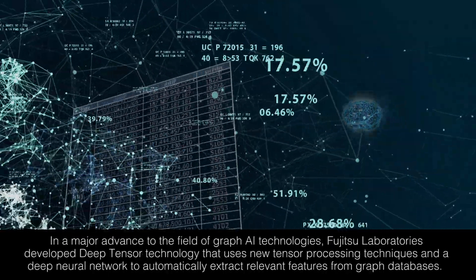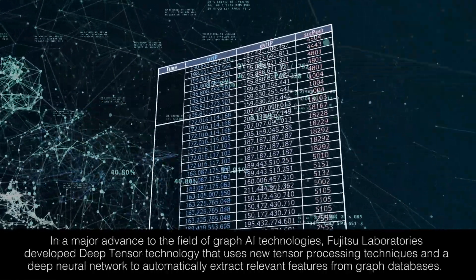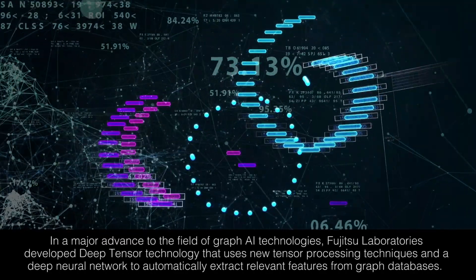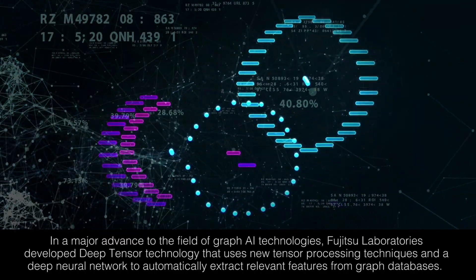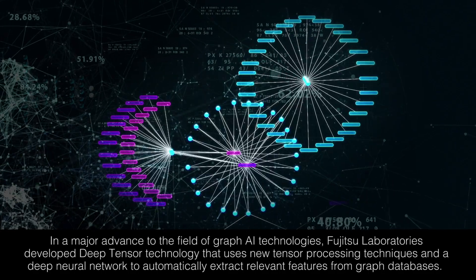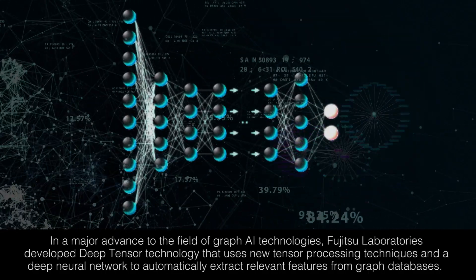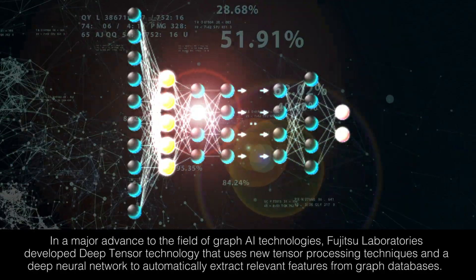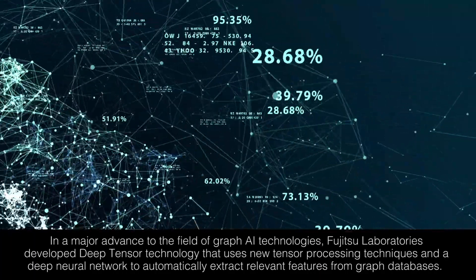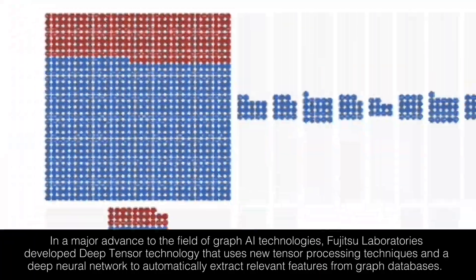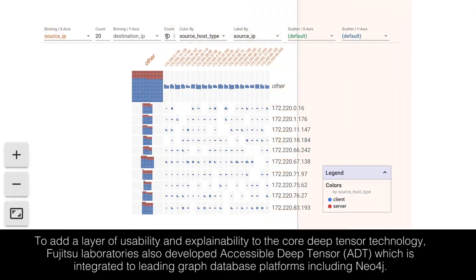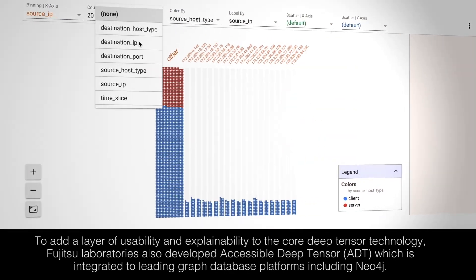In a major advance to the field of graph AI technologies, Fujitsu Laboratories developed Deep Tensor technology that uses new tensor processing techniques and a deep neural network to automatically extract relevant features from graph databases. To add a layer of usability and explainability to the core Deep Tensor technology,